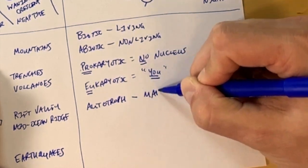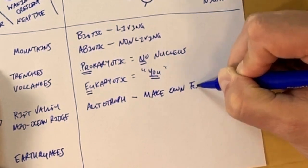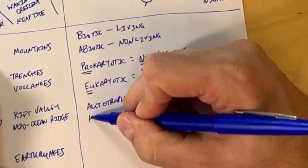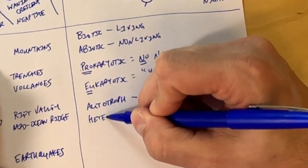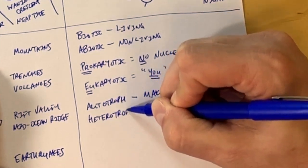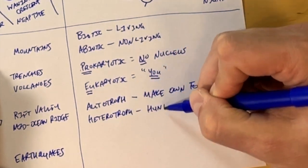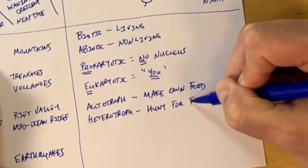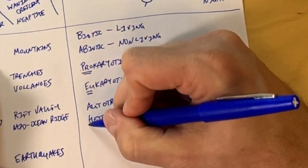And then we have autotrophs, which make their own food, like plants. And heterotrophs, which hunt for their own food. The way I like to remember this is the H in heterotroph is also the H in hunt.